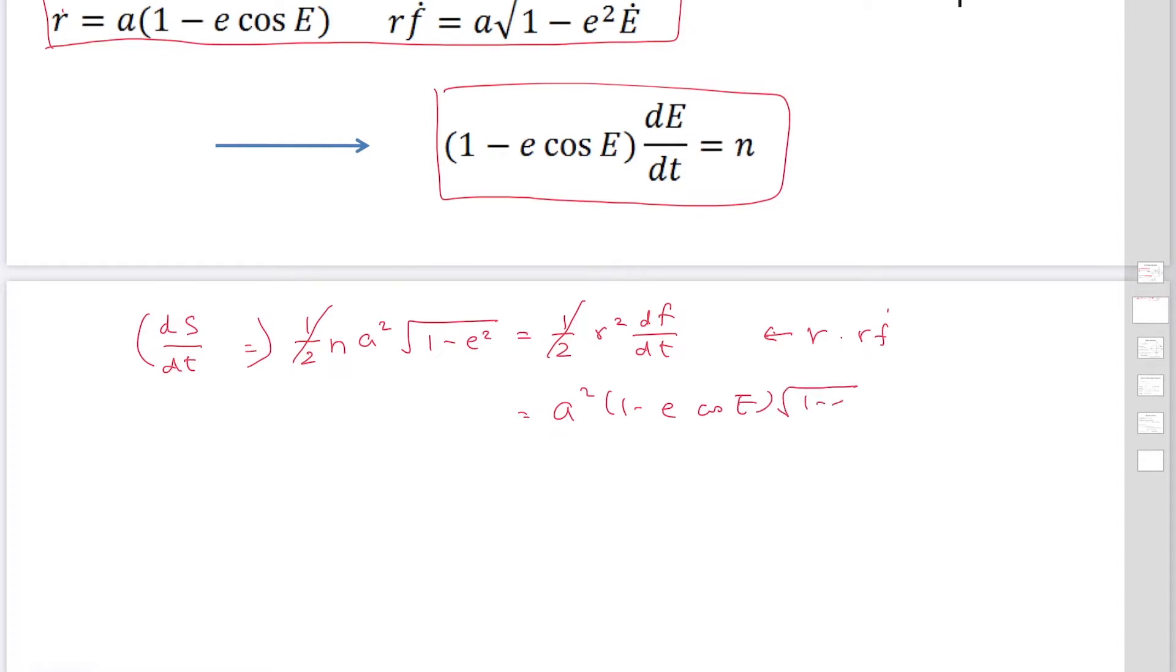Square root 1 minus E squared E dot. So this is N A squared square root 1 minus E squared. A squared appears in both sides. Square root 1 minus E squared also. Then finally we have obtained this relation.